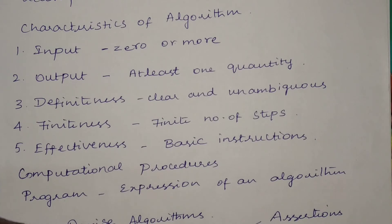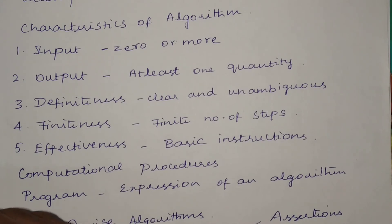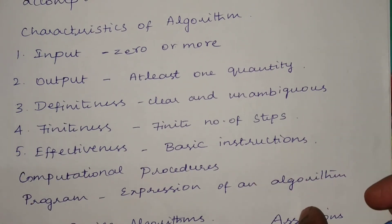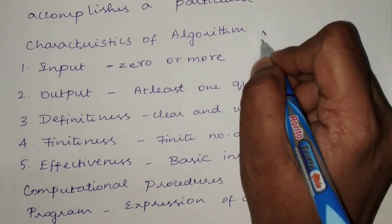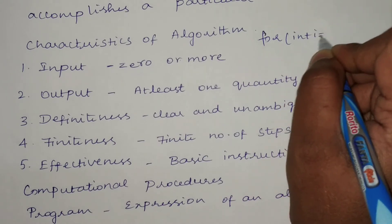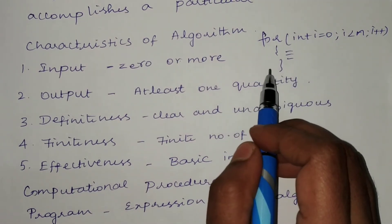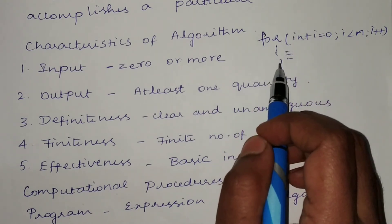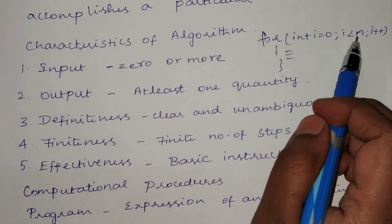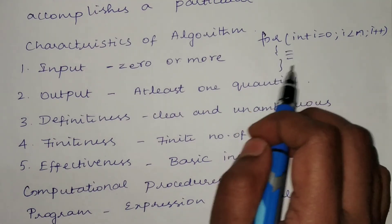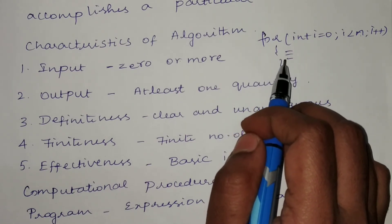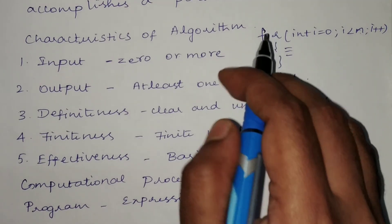The fourth criteria is Finiteness: whatever algorithm you create, all its steps must be finite. Once all instructions are completed, the algorithm terminates. For example, a for loop like 'for(int i = 0; i < n; i++)' is finite because we know exactly how many times it will execute — until i reaches n.